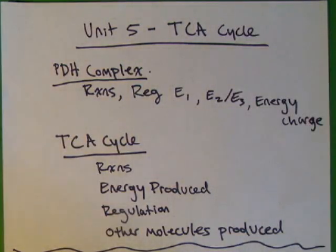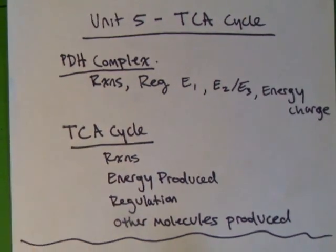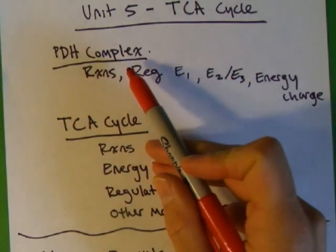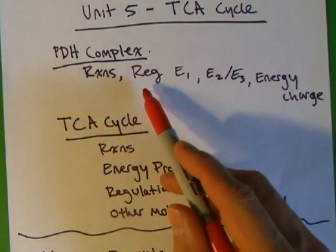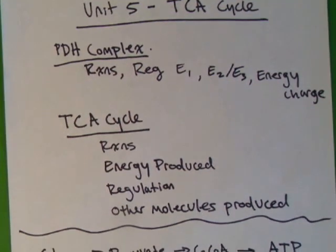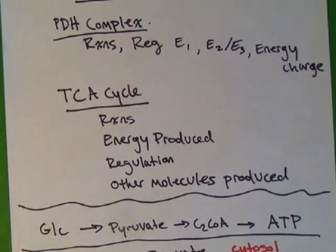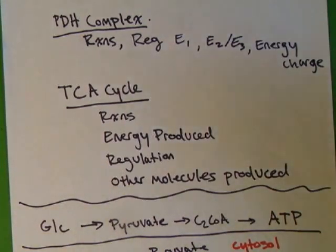Alright, unit five, the Krebs cycle, or the citric acid cycle. It's broken up into two main parts. The first part is the PDH complex, so we'll talk about the reactions and the regulation of all the enzymes and how it responds to energy charge. We'll talk about the Krebs cycle itself, the reaction, the energy produced, regulation of it, which is very simple, and other molecules that are produced out of the Krebs cycle.